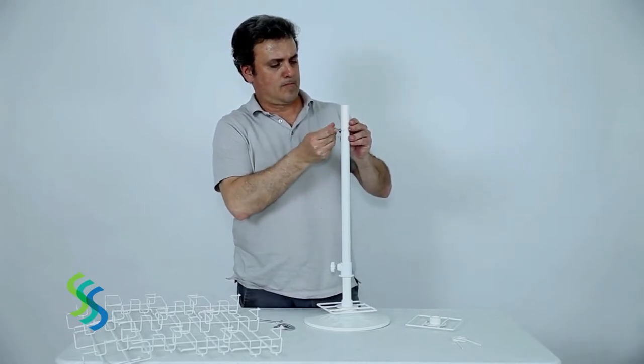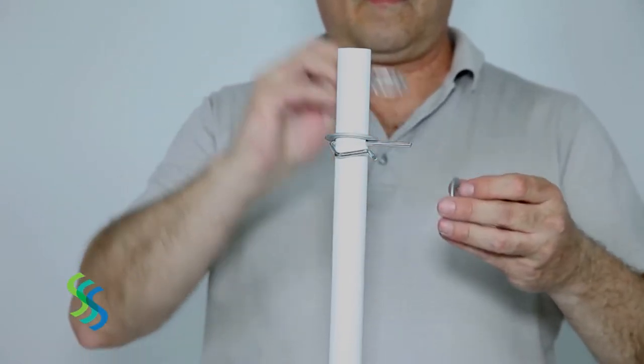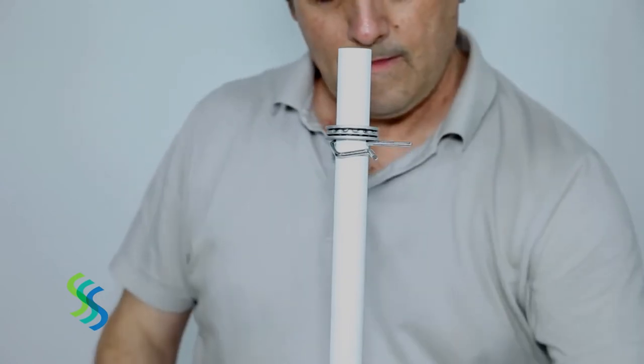Insert the cotter pin into the pole. Slide onto the pole one set of bearings, one bushing with the narrow end upward, and one square frame resting on the cotter pin.